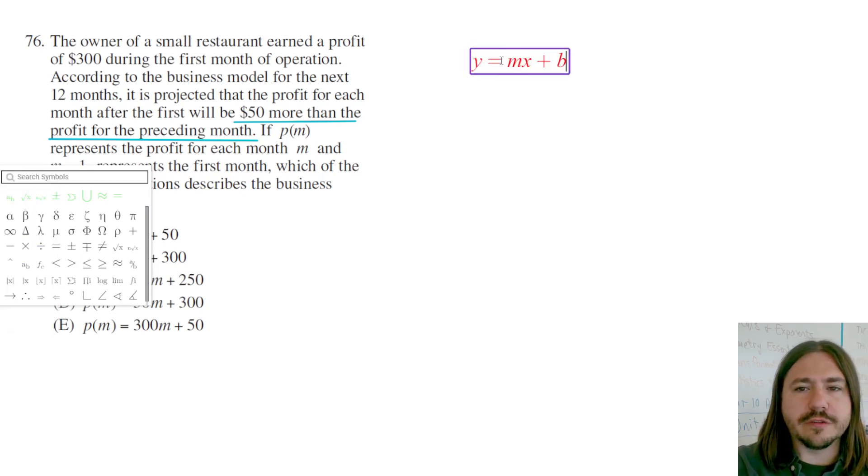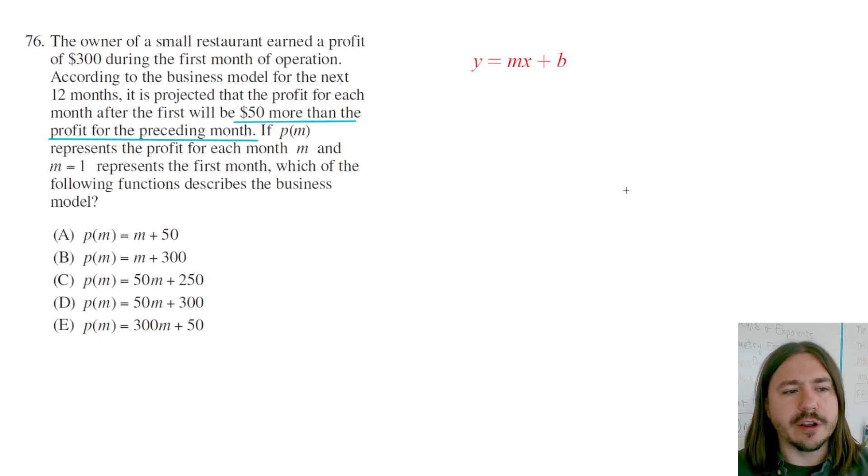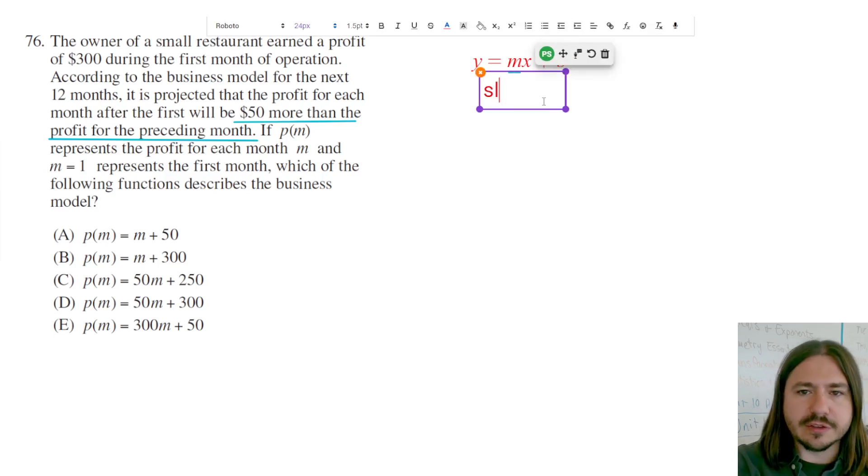Our equation is going to take this form, and the m in this equation represents the slope or the rate of change.